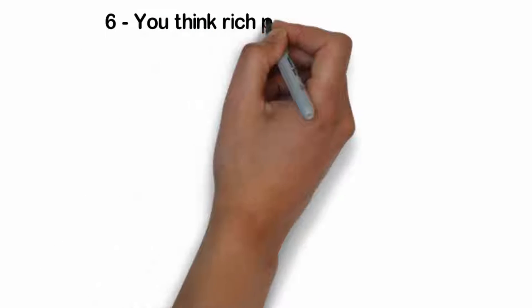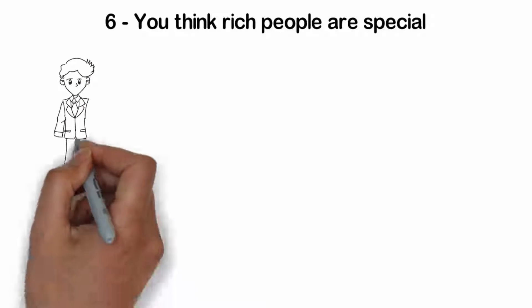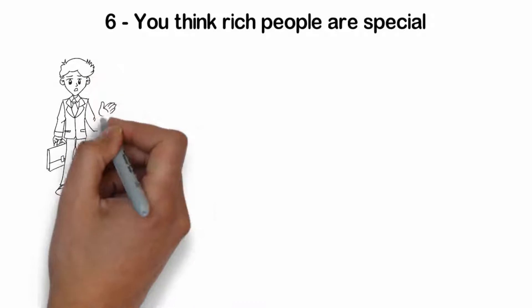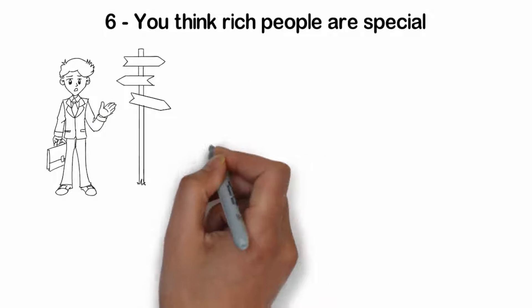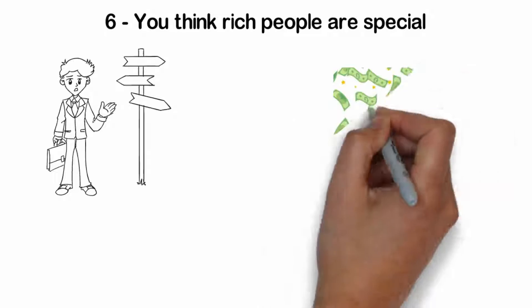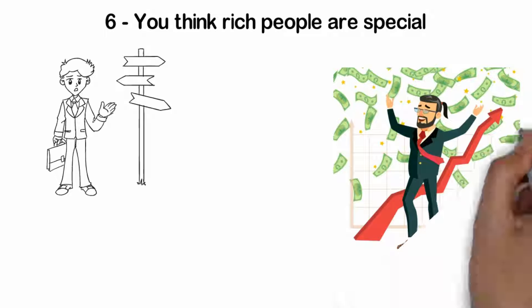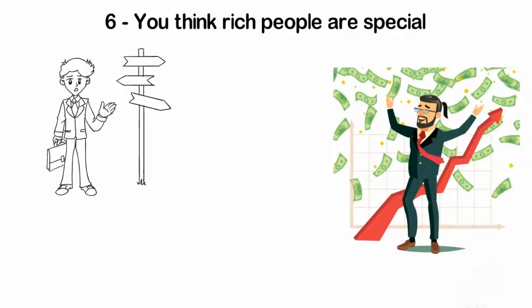Number 6: You think rich people are special. If, to you, life is fatally divided between those to whom everything naturally succeeds and those who are doomed to failure, you are already on the wrong path. By perceiving rich people as exceptional people, you spontaneously exclude the possibility of becoming one someday. Many tend to think that to succeed, you need something extra, or that everything is a matter of chance. This idea is wrong.